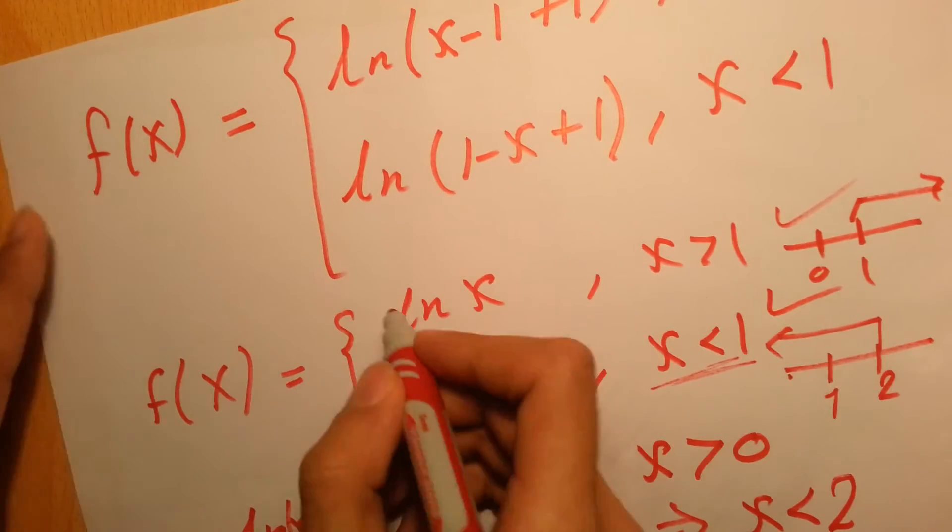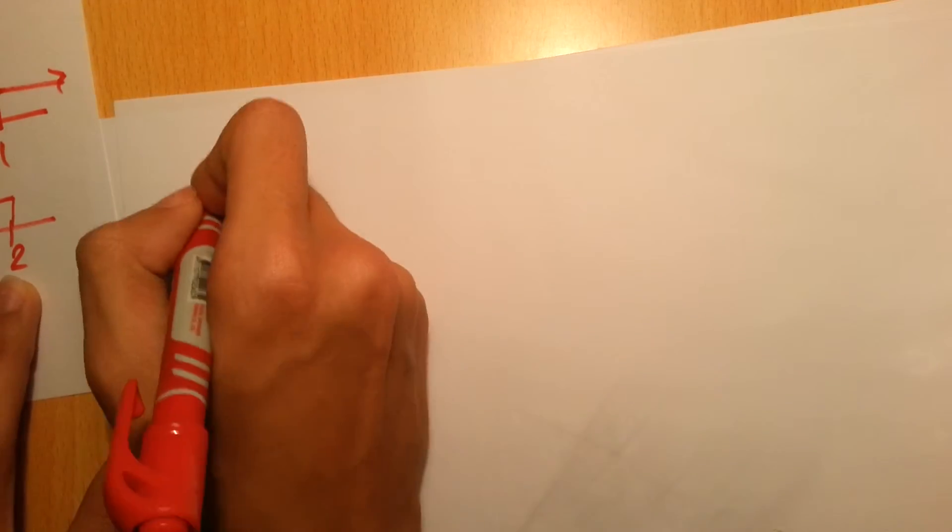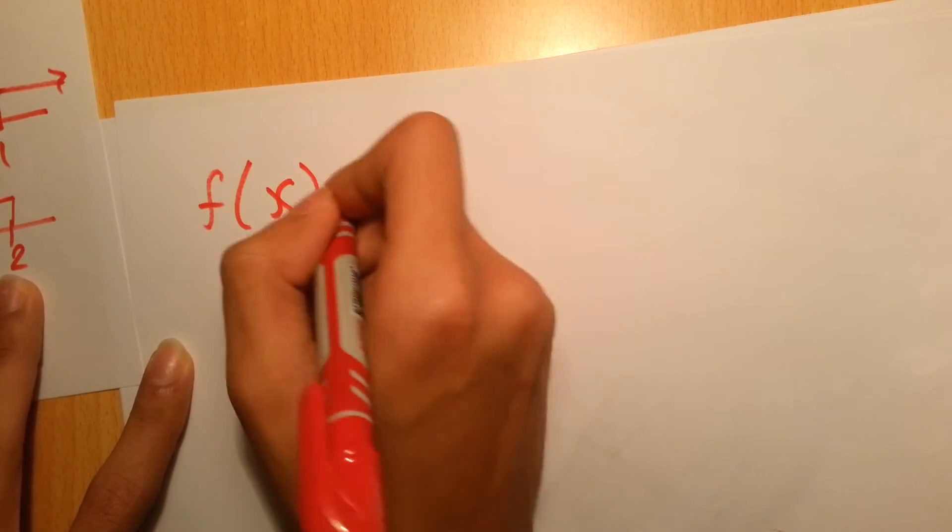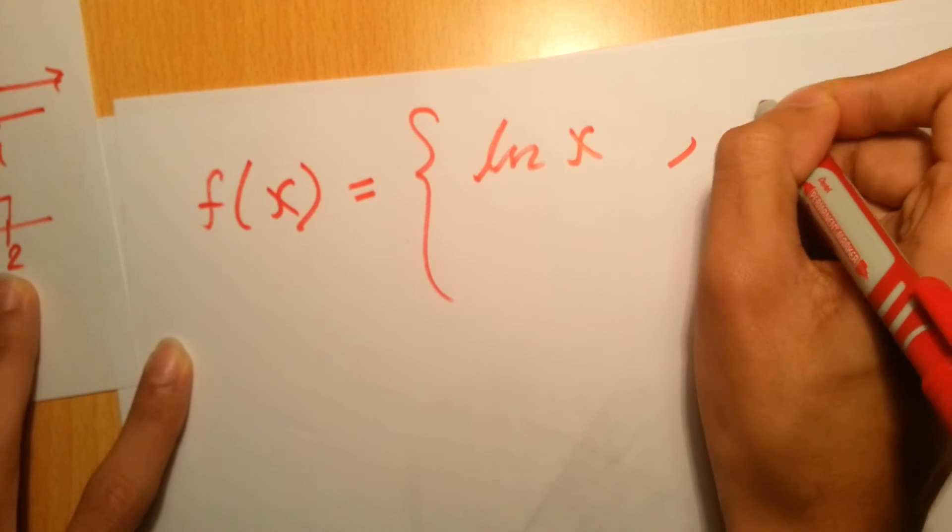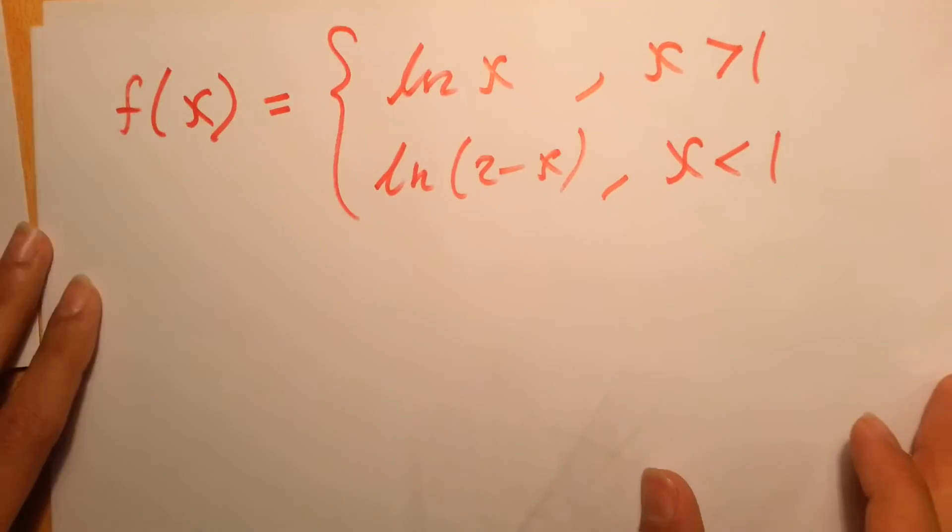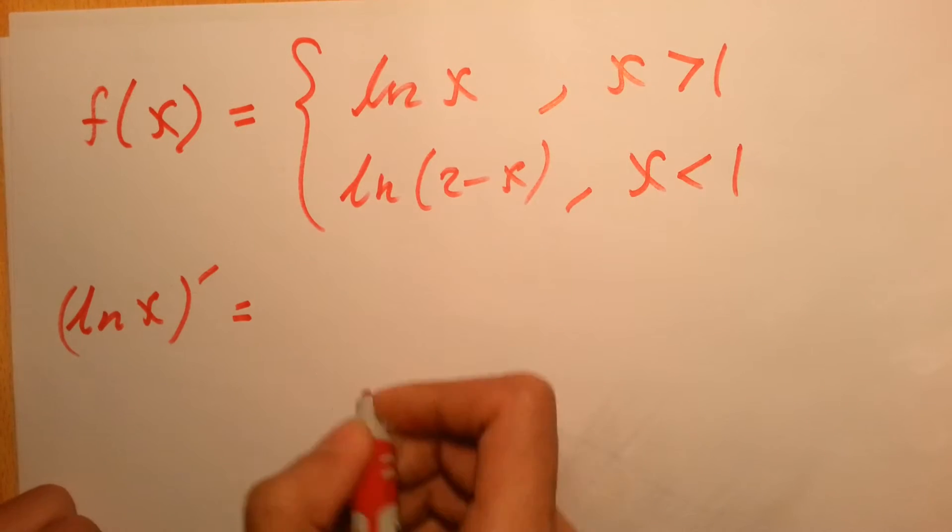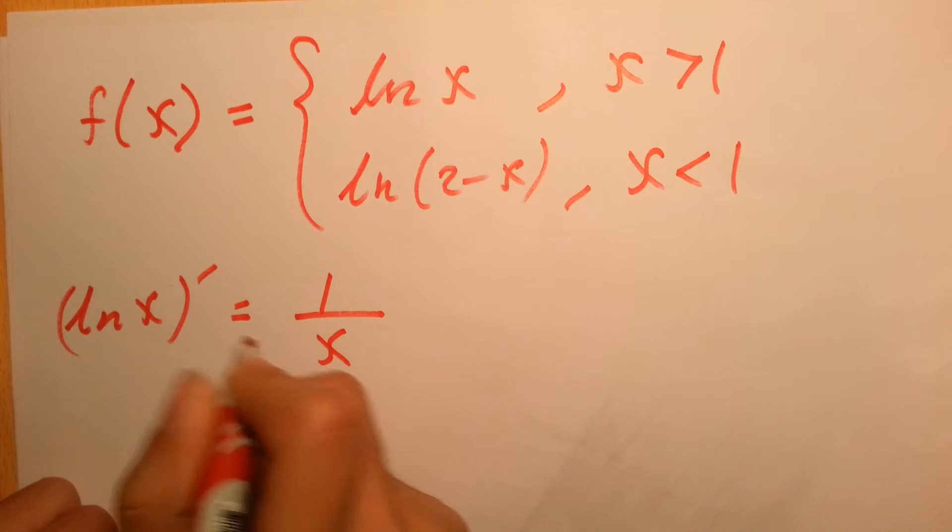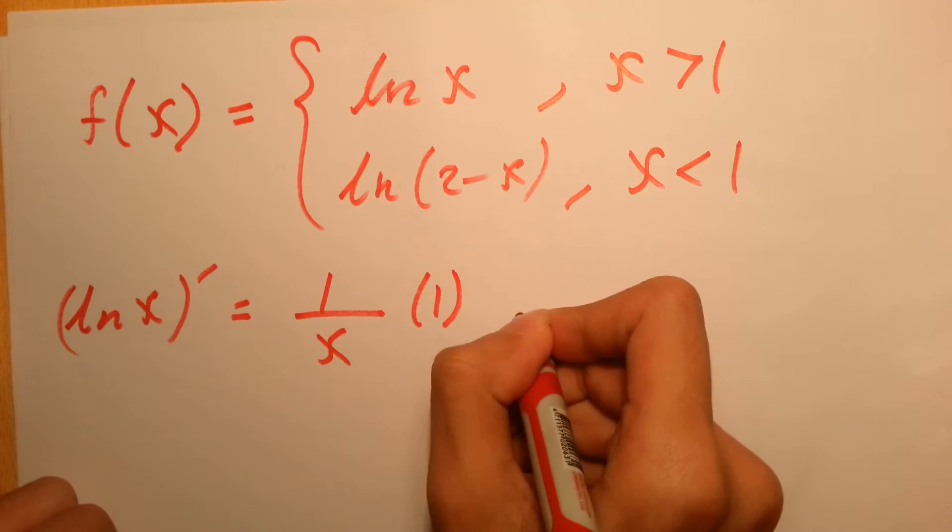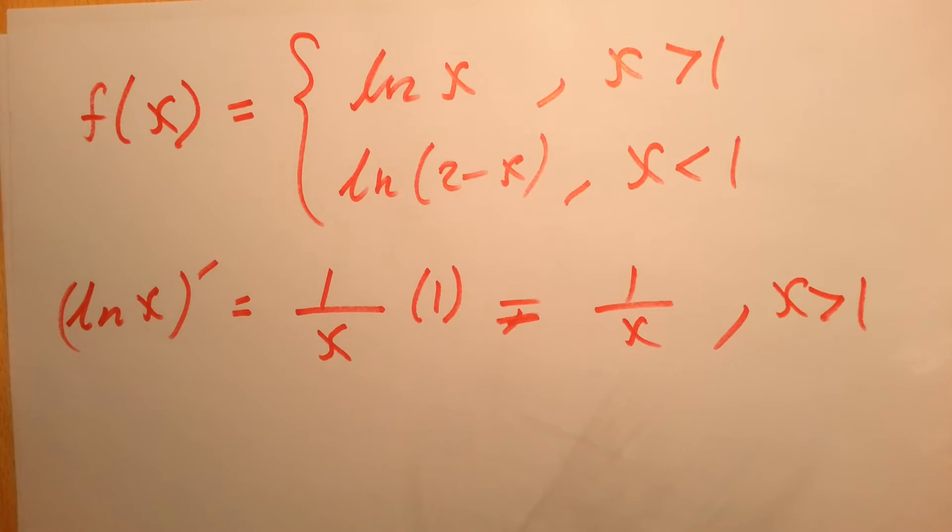The second part, you're asking if it's differentiable or not. So we directly will use this new function, which is equal to the function in the beginning, but this will make it easier for you to derive. So f of x equals ln x for x greater than 1, and ln of 2 minus x for x less than 1. Let's try the first part. The derivative of ln x equals 1 over x times the derivative of what's inside, which is 1, and that equals 1 over x.